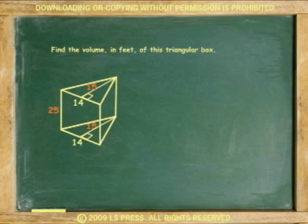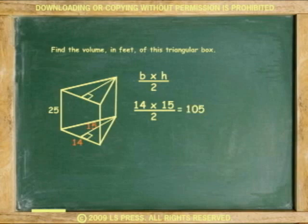Volume equals area of the base of the triangle times height or length of the box. So the area of the base is 14 by 15 divided by 2 equals 105 square feet, times the height of 25, the volume is 2,625 cubic feet.